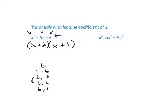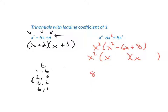Don't forget to look for a GCF first. Here, all terms have an x², so factor that out, leaving x³ + x + 8 inside — wait, let me correct that: it's x³ + 6x² + 8x, giving x²(x² + x + 8). Actually the trinomial inside is x² + x + 8. The last term is 8, and the middle is negative, so I need factors of 8 that are both negative: (−2)(−4) = +8 and −2 + (−4) = −6. So the result is x²(x − 2)(x − 4).